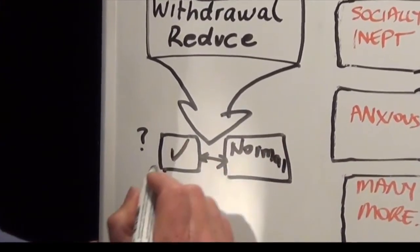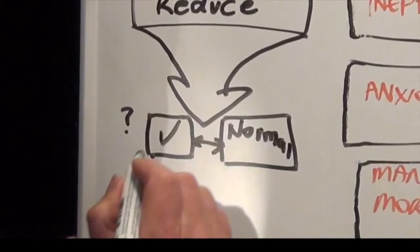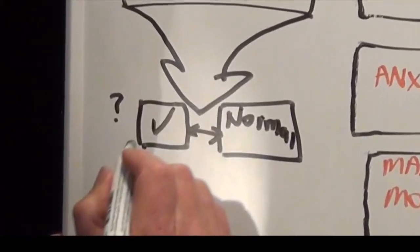And this is what therapies type 2 and 3 focus on, reducing withdrawal to the usual levels, sometimes called normal or neurotypical levels.